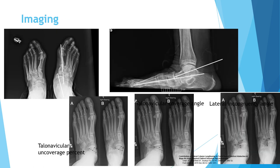For imaging, the most important part is a weight-bearing plain radiograph. Always obtain an ankle AP with the foot views to ensure the patient is not stage four. One of the most common angles used is the lateral talo-first metatarsal angle, or Meary's angle, and the AP angle between the first metatarsal and the talus. Other angles used include the talonavicular coverage angle — this should be around 20 degrees; a larger angle indicates more uncovering of the talus — and the talonavicular uncovered percentage.